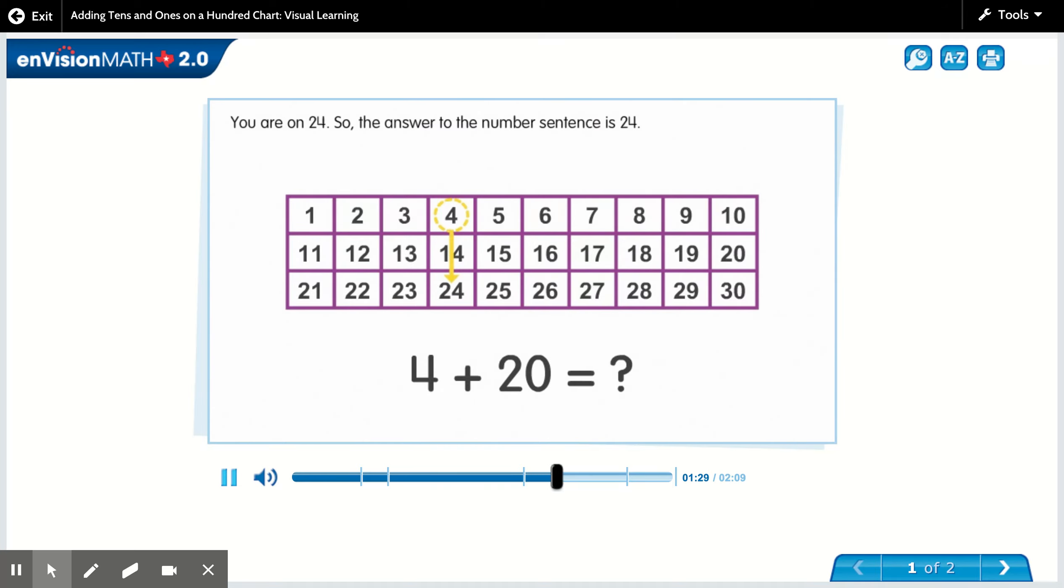Each row has ten numbers, so to add 20 you must move down two rows. You are on 24, so the answer to the number sentence is 24.